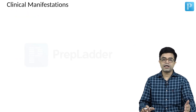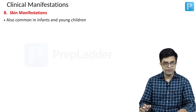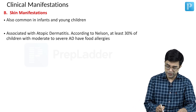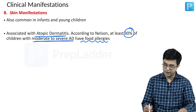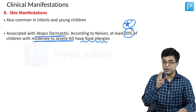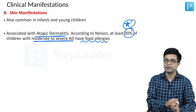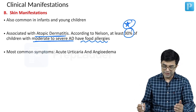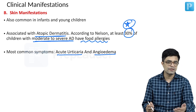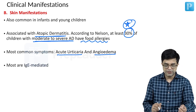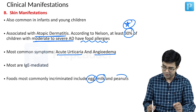Other clinical manifestations apart from the GIT include skin involvement, that is cutaneous involvement. It is also common in infants and young children and is often associated with atopic dermatitis. According to Nelson, at least 30 percent of children with moderate to severe atopic dermatitis will have food allergies — this percentage is important for exams. The most common symptom in these children will be acute urticaria and angioedema, although morbidiform rash and other skin lesions have also been described. Most are IgE mediated, and foods commonly implicated include eggs, milk and peanuts.